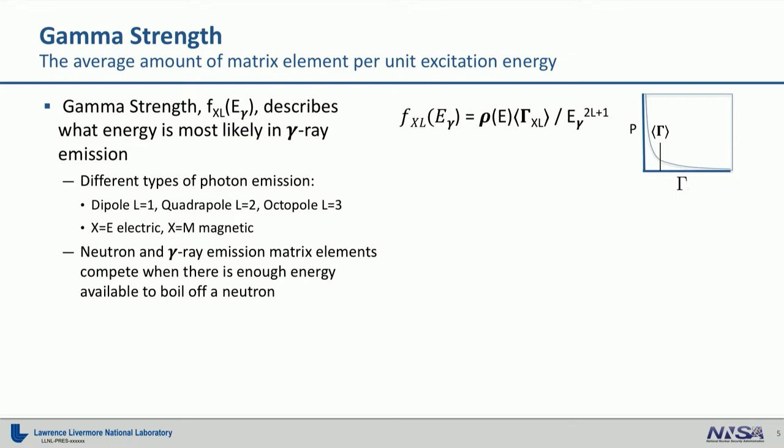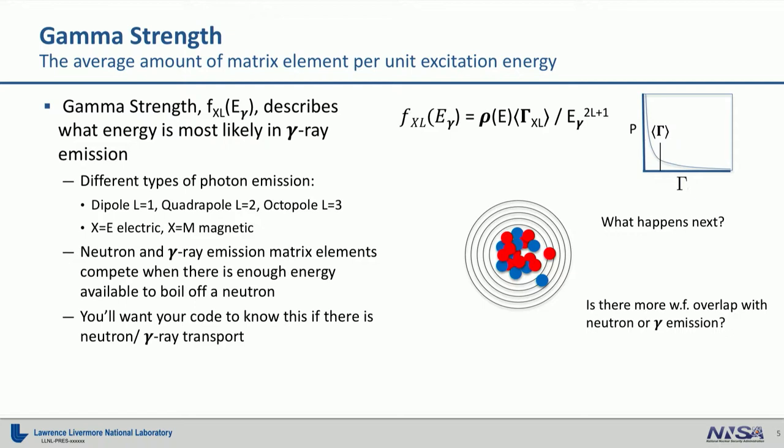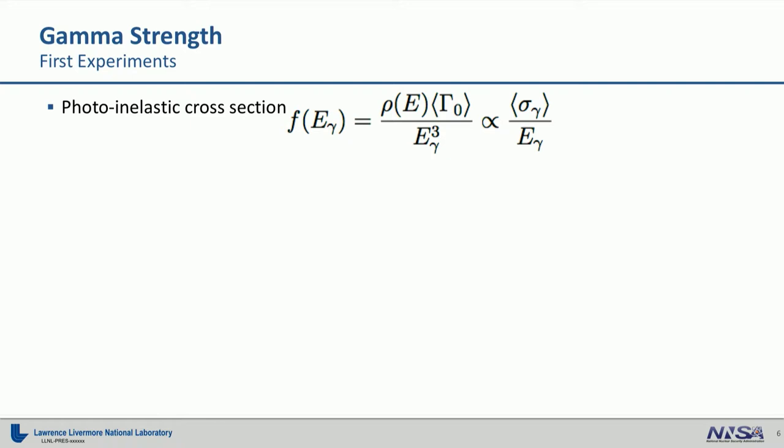Now, gamma emission is not the only decay channel. We also have neutron emission that competes with gamma ray emission when there is enough energy to boil off a neutron or a proton or any other type of small particle. So, imagine this scenario. You have a nucleus. Gamma ray comes in, gets absorbed, and promotes a couple nucleons to higher orbitals. So, what's going to happen? Well, one scenario is that it decays and one of the protons, one of the neutrons flies off. There's enough energy in the excited system for this to occur, or we can rewind. And another probability is that a gamma ray is emitted, and now you don't have enough energy to emit any particle. So, you'll want your code that does all of your simulations to know whether there's more wave function overlap with neutron or gamma ray emission.